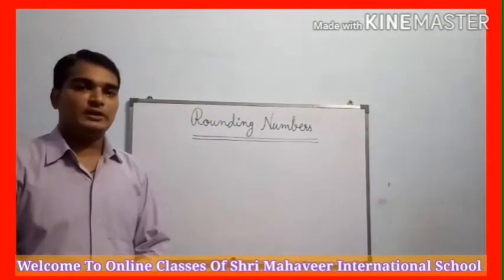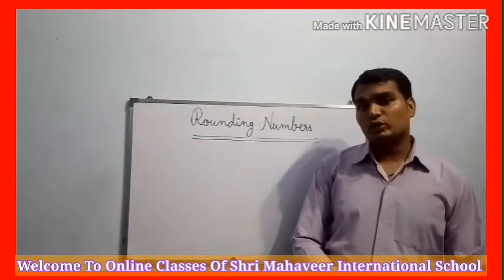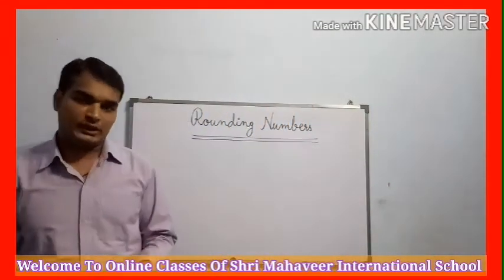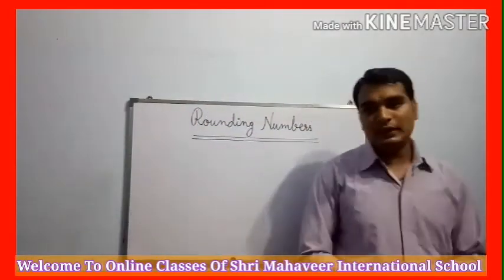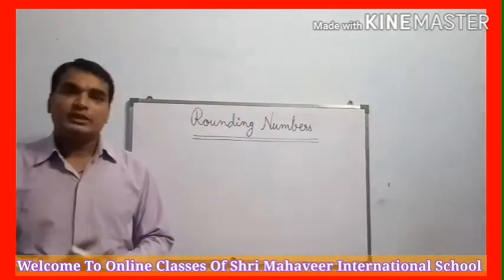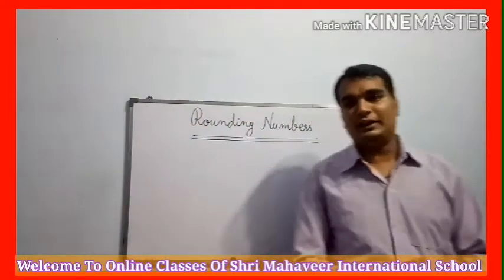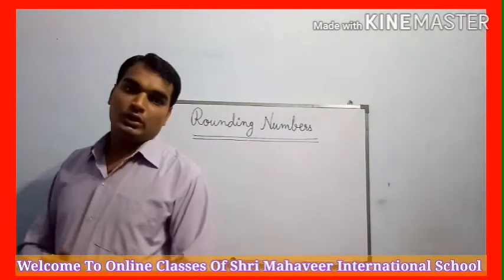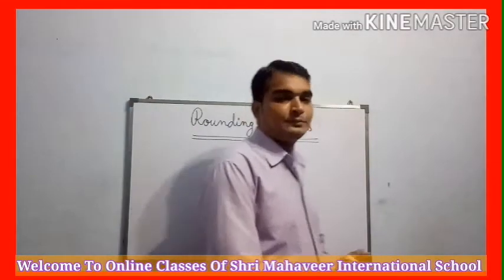Today I will teach you the topic of Rounding Numbers. Rounding Numbers is used to quickly find the estimation of rupees, numbers, etc. किसी भी digits का या rupees का या amount का estimation निकालने के लिए easy रहता है. For example, we have market and we have 97 rupees का हमने market से सामान purchase करी. तो हम quickly अगर कोई बोलता है कि आपने कितने रुपए खर्च किए तो हम बोलते हैं 100 rupees.